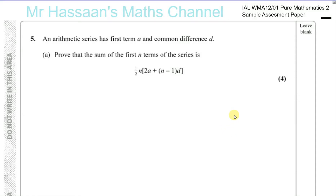Question number 5 from the sample assessment paper from Pure Mathematics 2, question 5, part A. An arithmetic series has a first term A and common difference D. Prove that the sum of the first N terms of the series is given by this formula: half N brackets 2A plus N minus 1 times D. I'm going to make it more understandable for those who maybe are not sure about this particular proof.